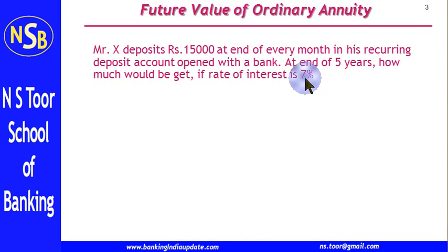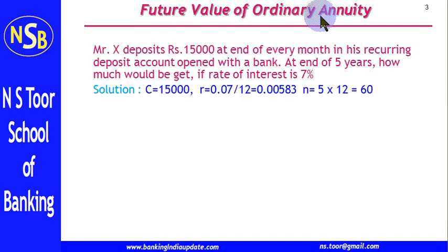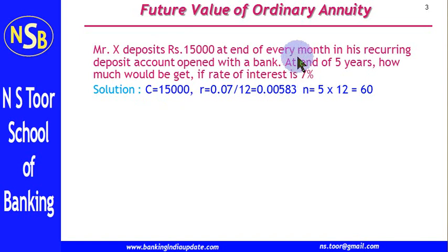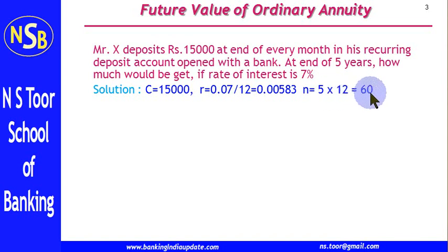We have to calculate how much amount he would get — that is the future value of ordinary annuity. The cash flow is Rs 15,000, which is also the amount of annuity. The rate of interest is 7%, but since he deposits monthly, it is converted to a monthly rate by dividing 7 by 12. The period is 5 years, giving 60 installments in total.